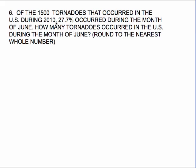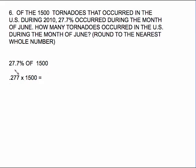How many tornadoes does that mean? Well, of the 1,500 tornadoes, that word 'of' gives you a big hint — it's going to mean times. So it's just a matter of setting up 27.7% of 1,500. To change a percent to a decimal, you move the decimal two places to the left, giving us 0.277. Type 0.277 times 1,500 into a calculator, which is approximately 416 tornadoes.